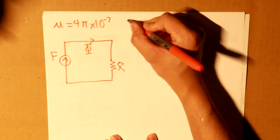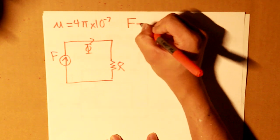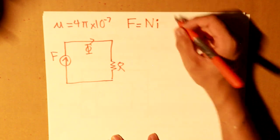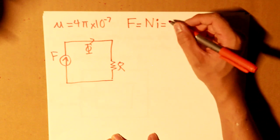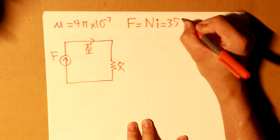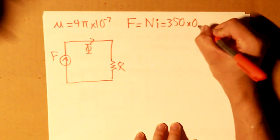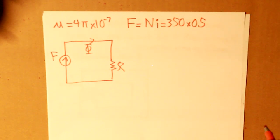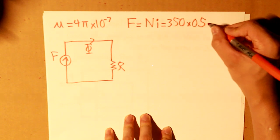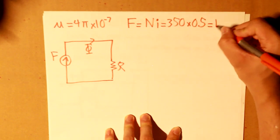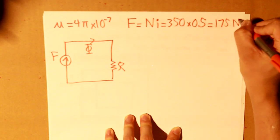So, first of all, F is equal to N times I. And what we know is that the number of turns the coil has is 350, and the current that it's flowing through is 0.5 amps. And what we get there is, we use a calculator, 175 newtons.